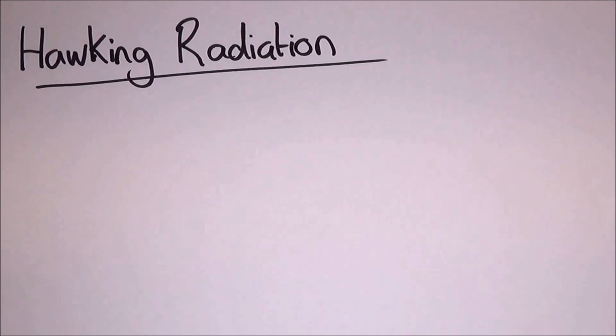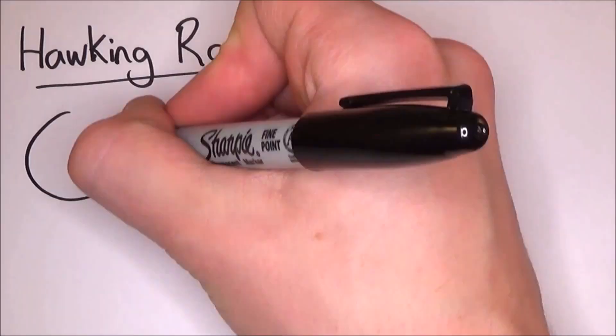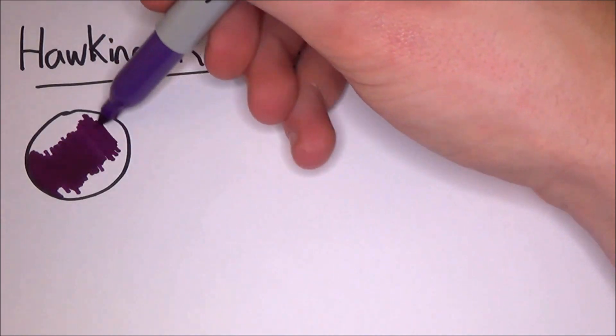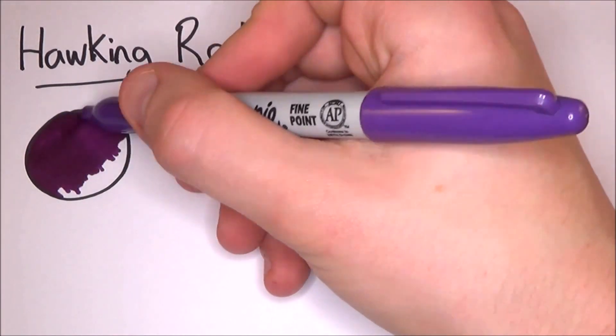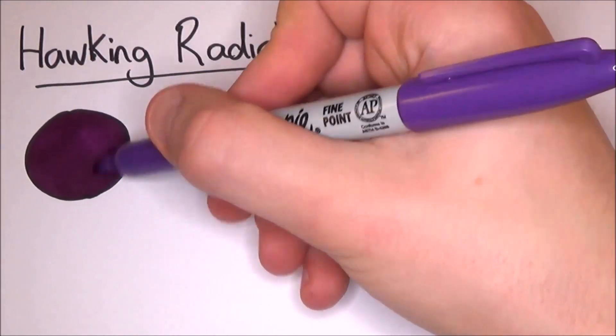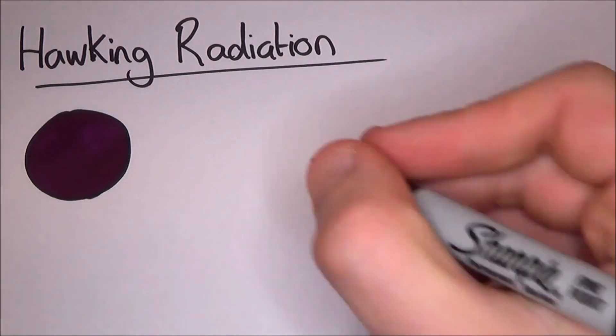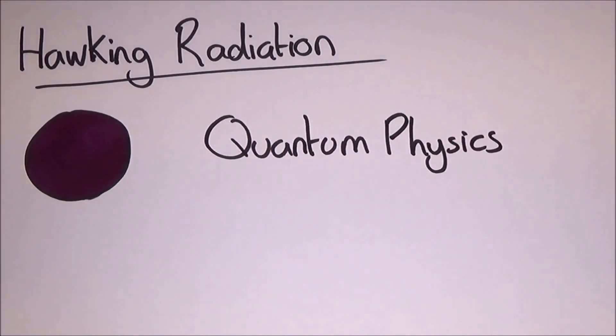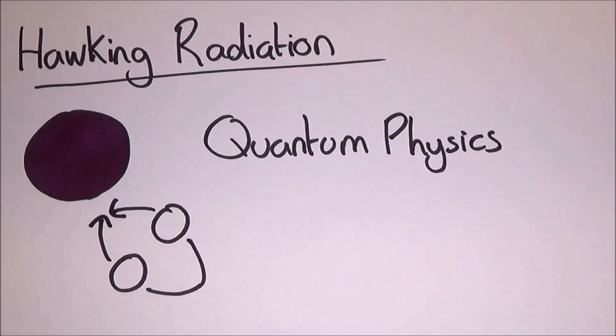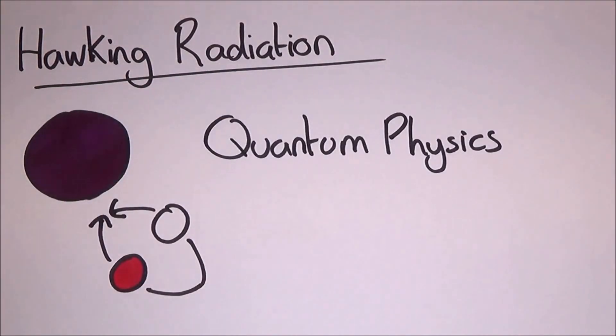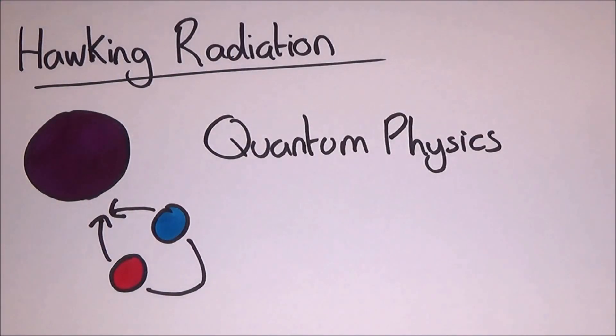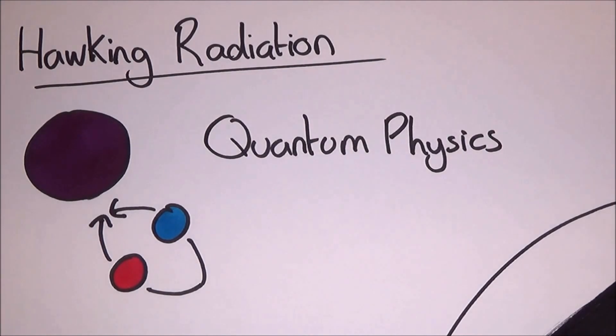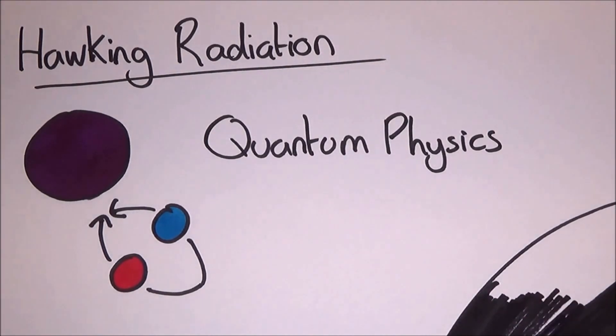Except Hawking radiation doesn't say that matter which falls into a black hole will come out of a white hole. In fact, Hawking radiation says that black holes are not actually black at all. As you might have guessed, Stephen Hawking came up with Hawking radiation, and he said that black holes emit a faint glow because of quantum physics. Yeah, it's back again.